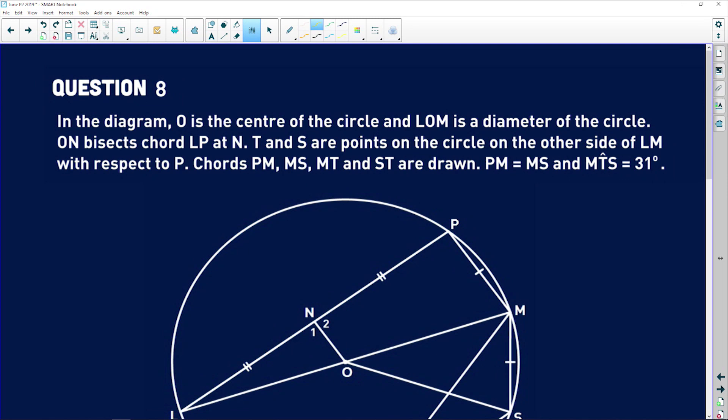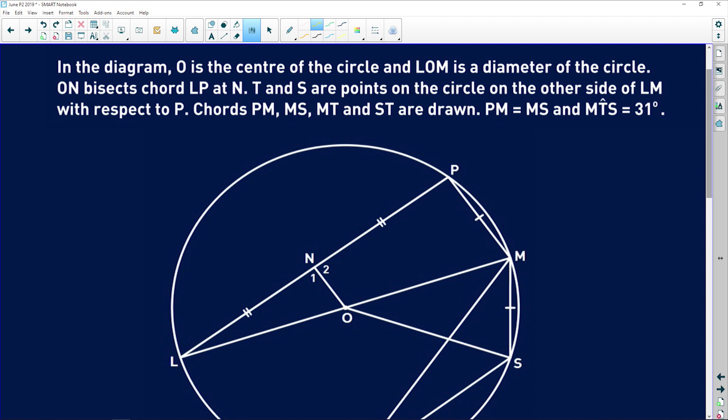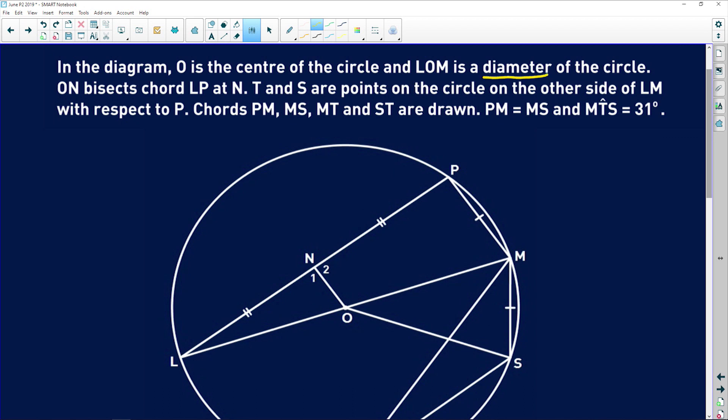It says in the diagram, O is the center of the circle and LOM is a diameter of the circle. Before we go anywhere, they're saying that this line here, LOM is the diameter. So what does the diameter do? It subtends 90 degrees on the circumference. Very important. Fill that in.